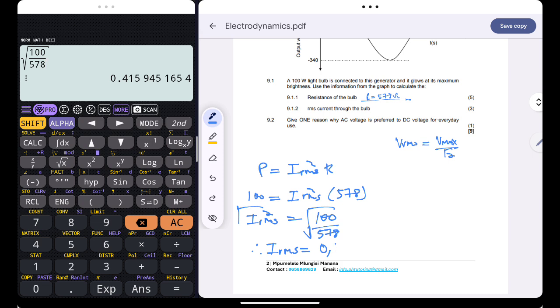That's just 0.4159, basically 0.416 amperes. So that's our rms current.